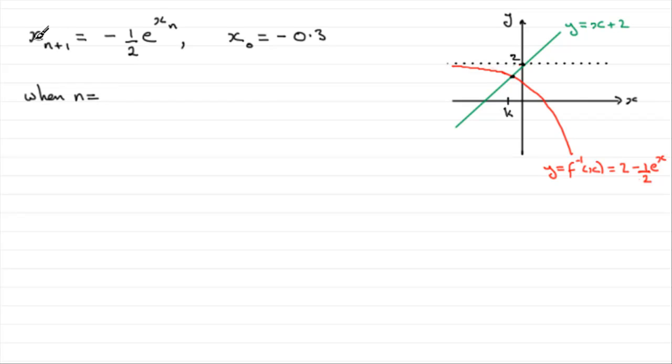To get the first approximation, what is often called x1, we need to set n equal to zero because we would have x with the subscript zero plus one and that will give us x1. That is equal to minus a half e to the power x with the subscript n, which is now zero, x0. But we know what x0 is, it is minus 0.3. So this is going to be equal to minus a half e to the power minus 0.3. If you work that out on your calculator you should find you get minus 0.370409 and so on. We've got to give this to four decimal places, so your first answer should be minus 0.3704, and we just put that in as four decimal places.